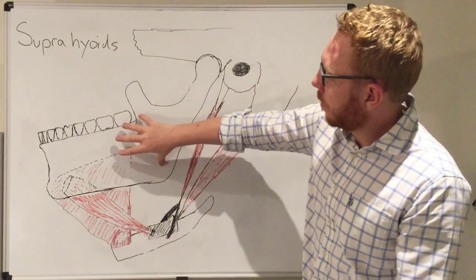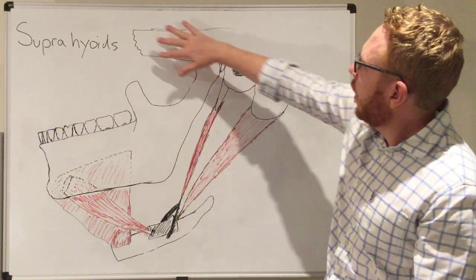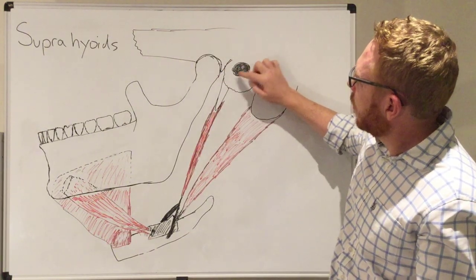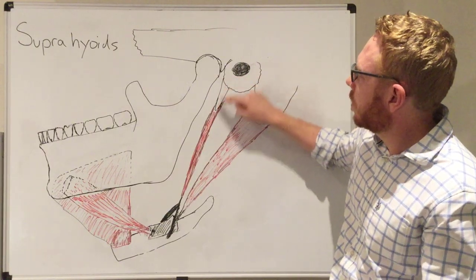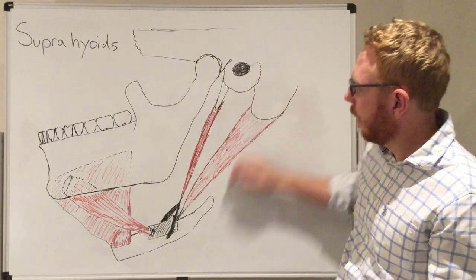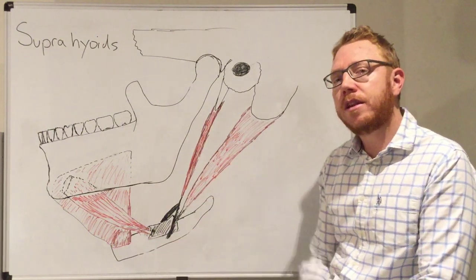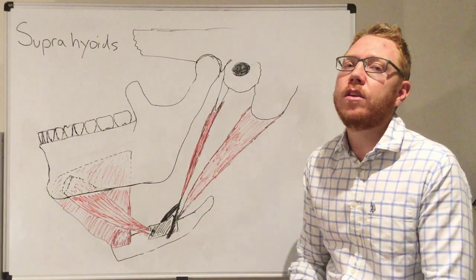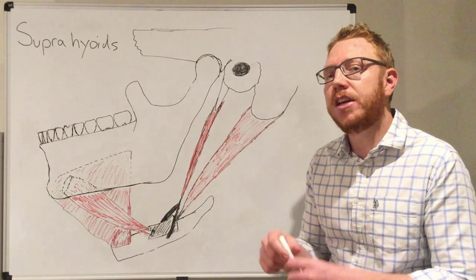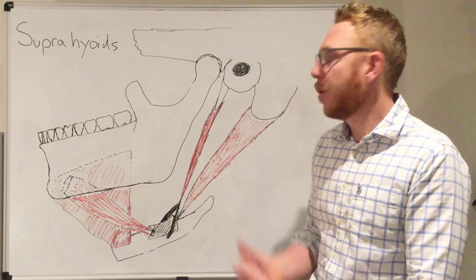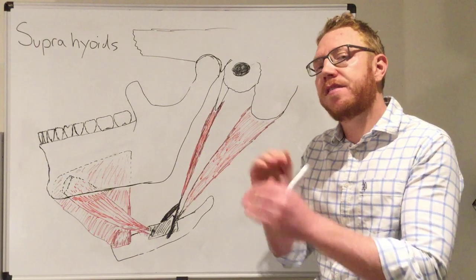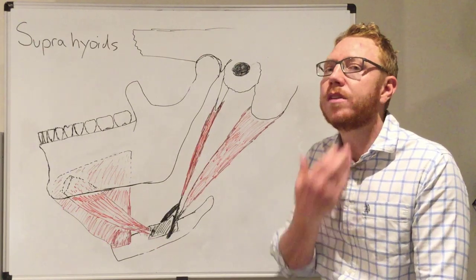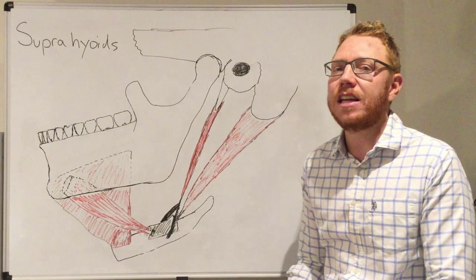Starting with this image, we can see the mandible with the teeth of the lower jaw. Here is the lower part of the skull with the zygomatic process going into the temporal bone, the external acoustic meatus, the styloid process, and the mastoid process. Down here in black is the hyoid bone. Three out of four of these muscles come out of the pharyngeal arches — either the first or second — so please review the pharyngeal arch video. The fourth muscle, the geniohyoid, is more of a strap muscle with a slightly different nerve innervation.